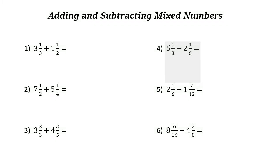Adding and subtracting mixed numbers. To add two mixed numbers, first you need to add the whole numbers. A mixed number contains two parts: the whole number and the fraction part. First, add the whole numbers — three plus one is four. Now let's add the two fractions.